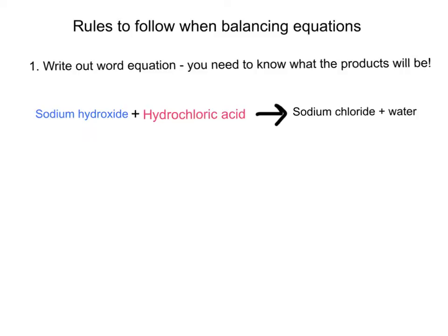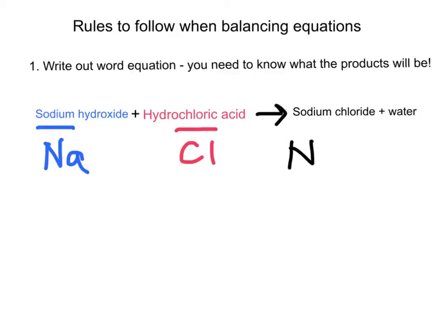So how do we actually get this metal salt? The metal can only come from the sodium, which is found in the base, and it's going to combine with the non-metal part. A metal salt is basically a combination of a metal and a non-metal together. The non-metal part is the chloride, and the sodium part combines with it to give us NaCl, or sodium chloride, on the other side of the equation.